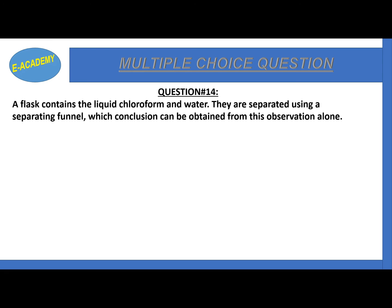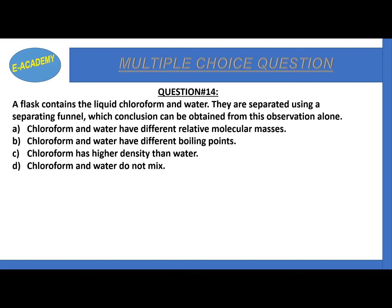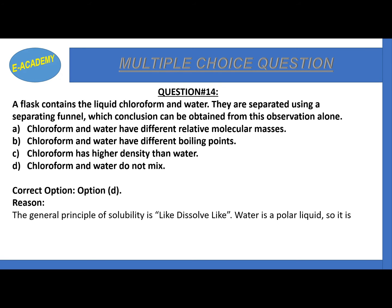Question 14. Chloroform and water can be separated because: they have different molecular masses, they have different boiling points, chloroform has higher density than water, or chloroform and water do not mix. The correct option is option D: they do not mix. By the principle of 'like dissolves like,' water is a polar liquid and is insoluble in chloroform, which is a non-polar liquid, so they do not mix.